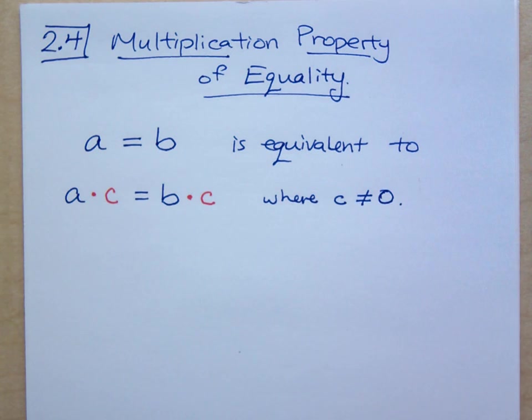Think about this. If you have the same amount of money as the person next to you, if both of you have your money multiplied times 2, you still have the same amount of money as each other. Or if you were to divide your amount of money by 5, you still have the same amount of money.